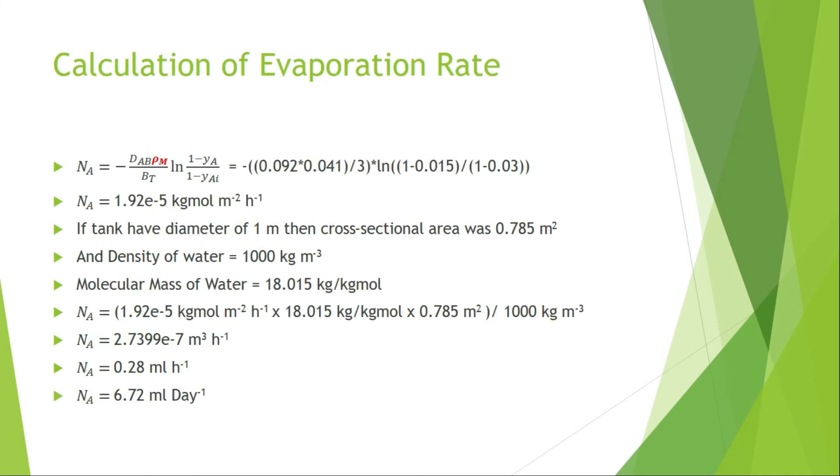By putting all values in the equation, the molar flux of water vapor that is evaporating per unit area per hour equals 1.92 × 10^-5. Now if we consider the diameter of the tank is 1 meter, then the cross-sectional area is 0.785 m², calculated by using πd²/4.